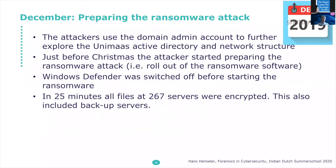That's actually what happened in December — the attacker was preparing the ransomware attack. They used the domain admin account to further explore the active directory and network structure. Just before Christmas they started preparing the ransomware attack, which is basically IT admin work — you want to install software across the network, similar to what a normal system administrator does when sending out a new version of Microsoft Office or antivirus software. They also switched off Windows Defender on all systems so they would not be blocked. After hitting go, in just 25 minutes all files on 267 servers were encrypted, including the backup servers. That was the moment on December 23rd when the university decided to call FoxIT.